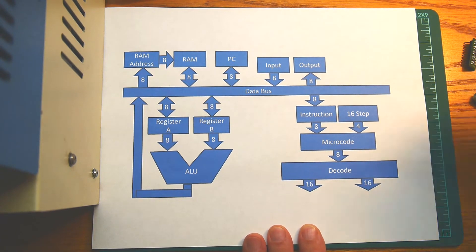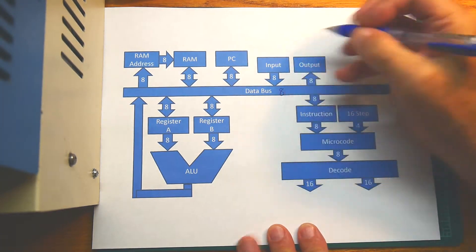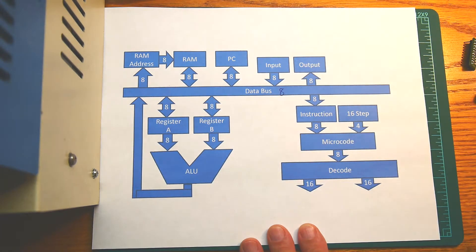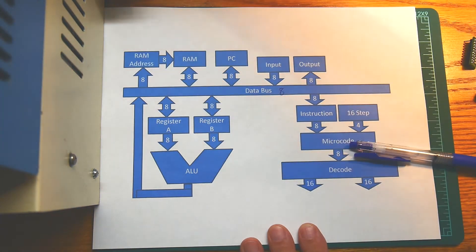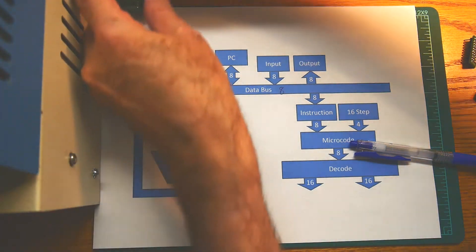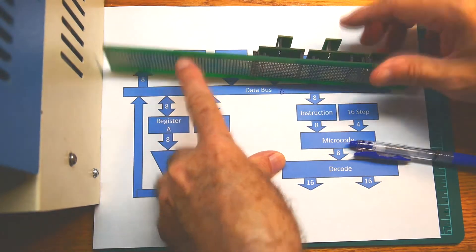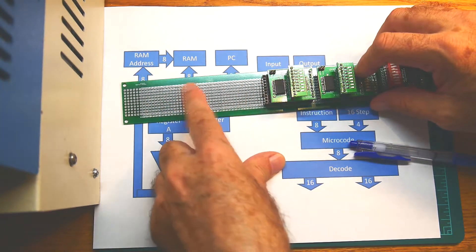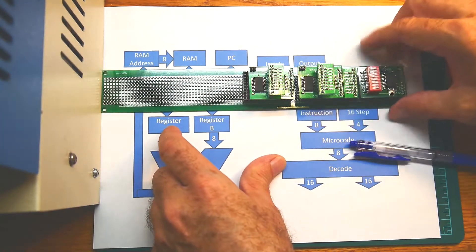This is the data bus, an eight-line data bus, and we're executing that with... let me pull my board over here. So this is the data bus, right? These are the eight wires plus power and ground.